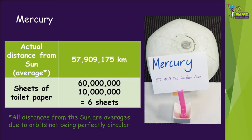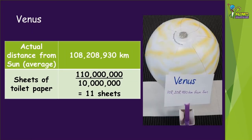Starting with the closest planet, Mercury, we'll first round the distance to the nearest 10 million, making it 60 million kilometres. Then we need to divide that number by 10 million, which is our scale. Our answer is that Mercury will be 6 sheets of toilet paper from the sun. The distance to the hottest planet, Venus, is about 110 million kilometres, so it will be 11 sheets of toilet paper from the sun.